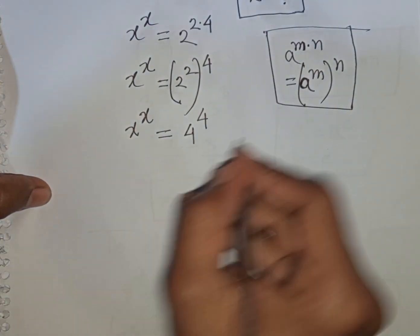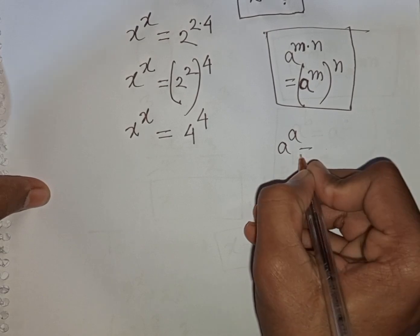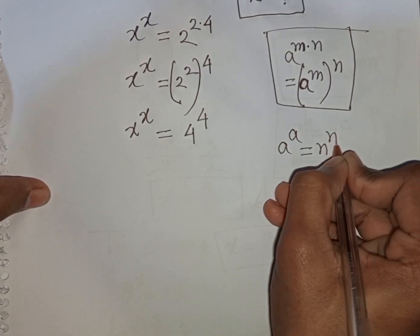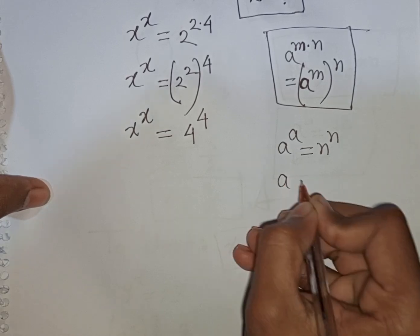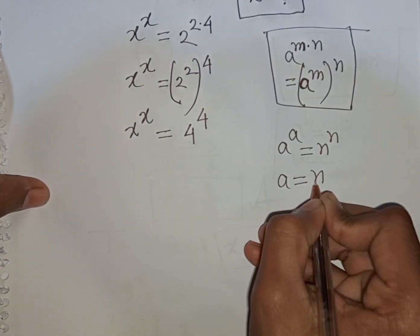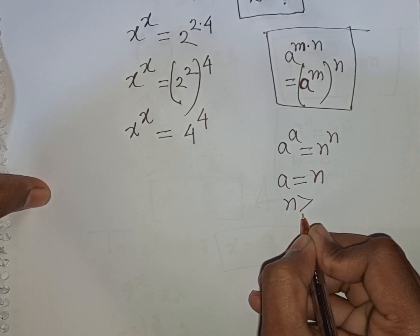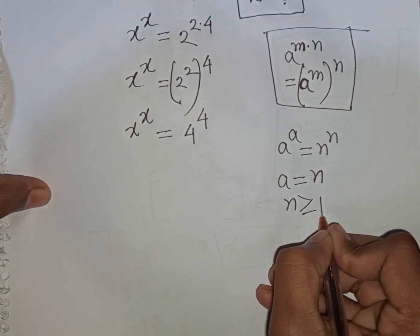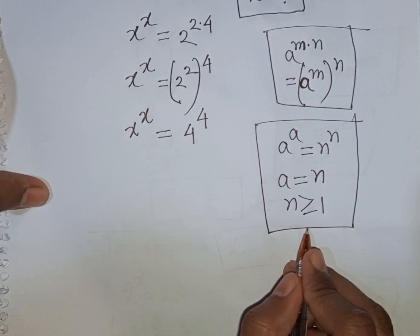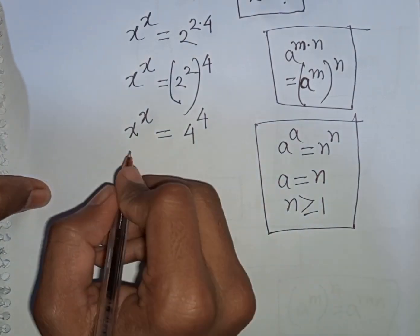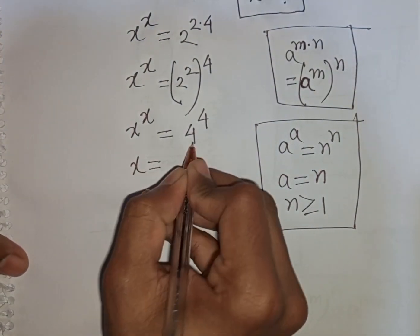Here you can apply the rule that a power a is equal to n power n, so a will be equal to n, where n is greater than or equal to 1. So according to this rule, I can compare here — x will be equal to 4.